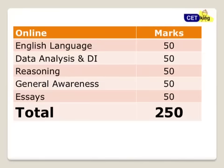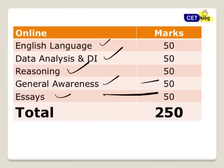So this slide gives an overview: 50 marks verbal, 50 marks DI, reasoning 50 marks, general awareness 50 marks, and essay writing 50 marks. So this is your 250 mark paper and that's your overall scope of the exam. Now I will go deep down into each of them and find out the importance of everything.